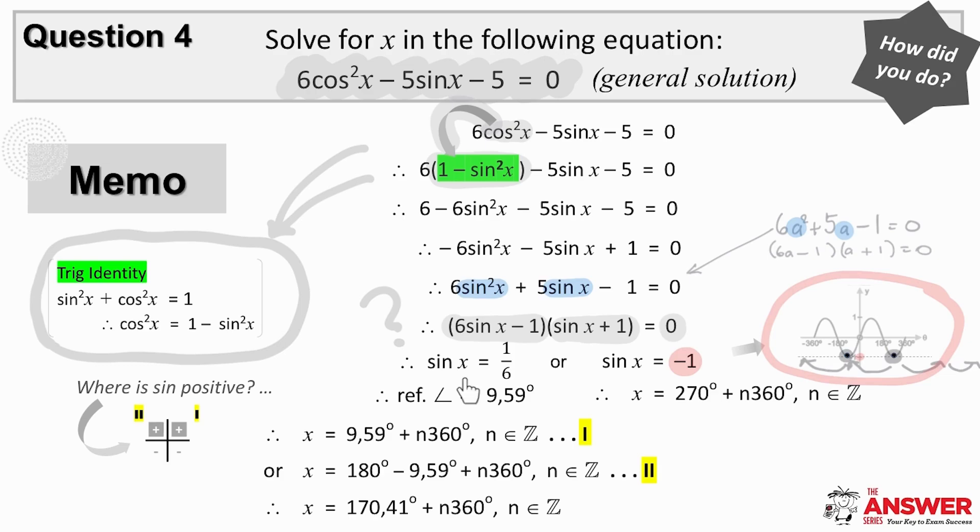And from sine of x equaling 1 over 6, this is a type 1 equation, a ratio equaling a value. And so the first step here is to calculate the reference angle, then decide which quad sine is positive in, and then you are ready to create your equations. This is the first quad solution, and here is the second quad solution.